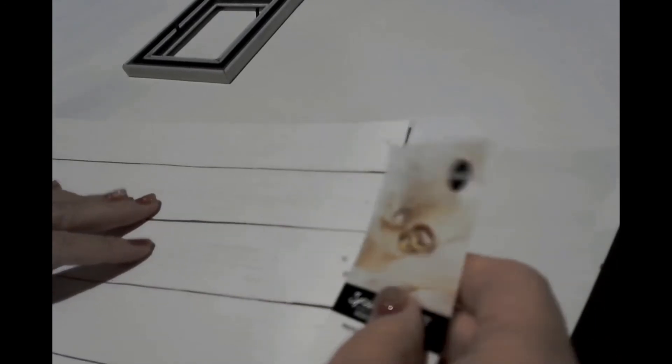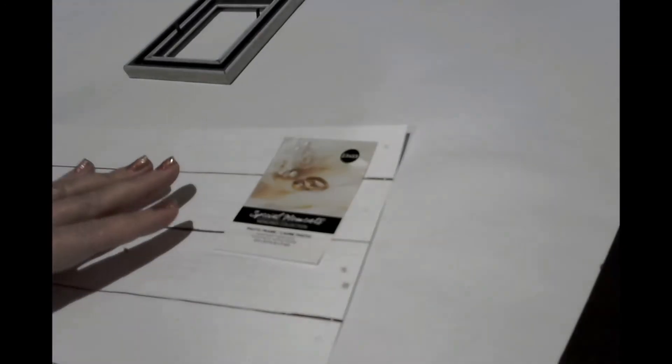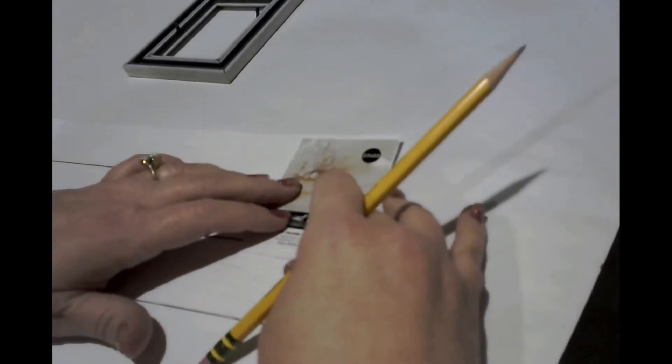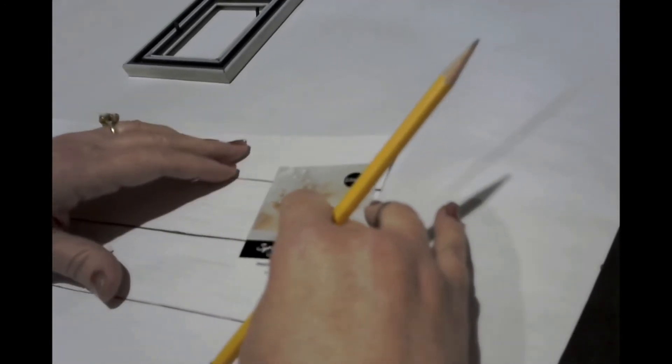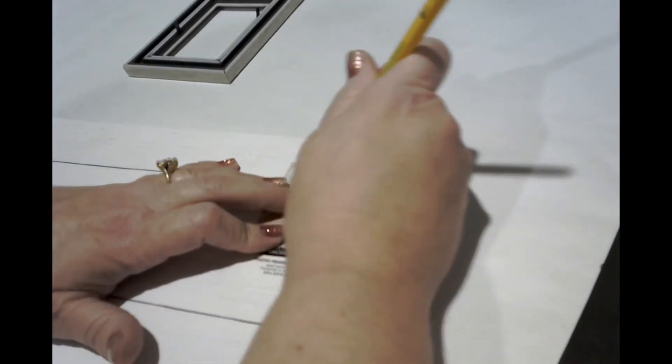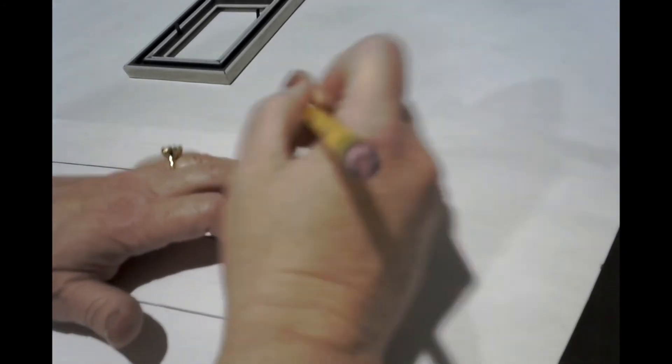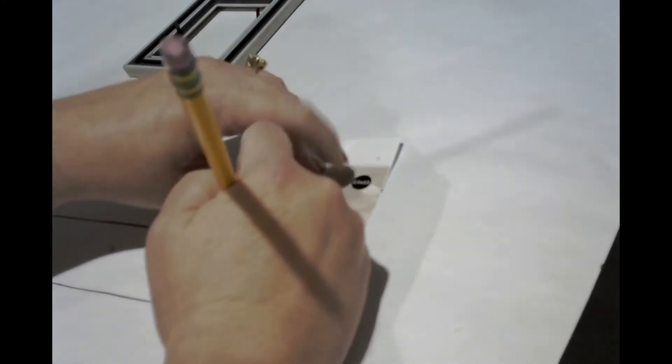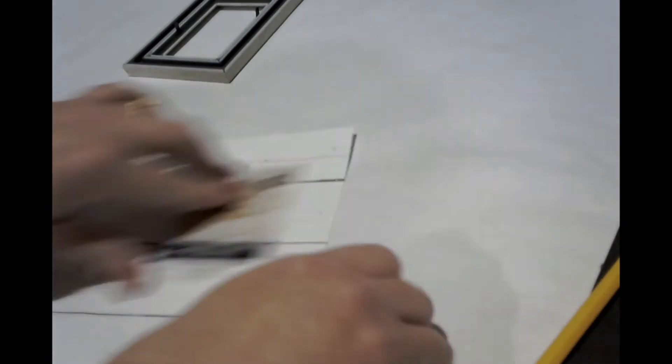And then I'm going to take my crafting paper and I'm going to go ahead and trace an outline to make sure that it fits inside the frame. And then you're going to go ahead and cut that out.